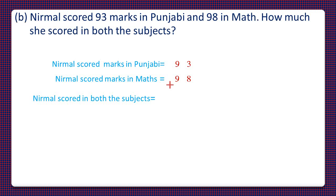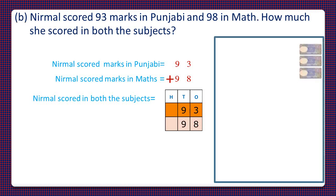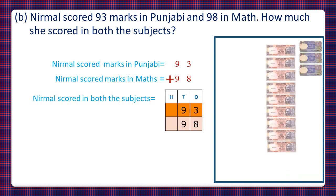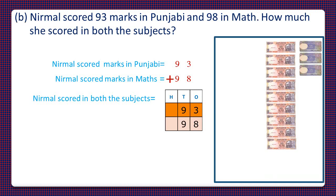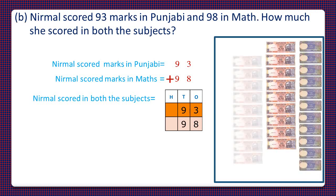To solve, we'll write the place value of digits on the top. In 93, there are 3 ones and 9 tens. So for 3 ones, we'll take 3 one-rupee notes, and for 9 tens, we'll take 9 ten-rupee notes. In the same way, in 98, there are 8 ones and 9 tens. So we'll take 8 one-rupee notes and 9 ten-rupee notes.